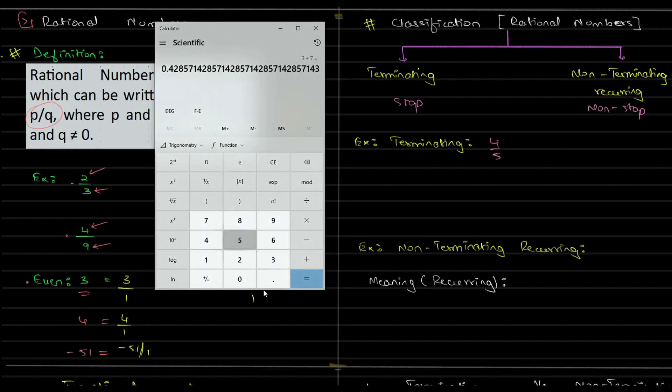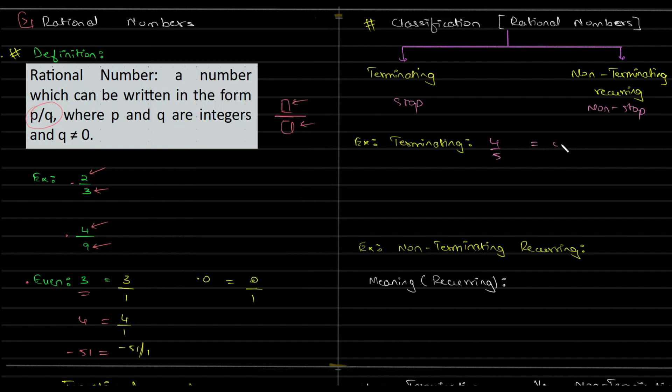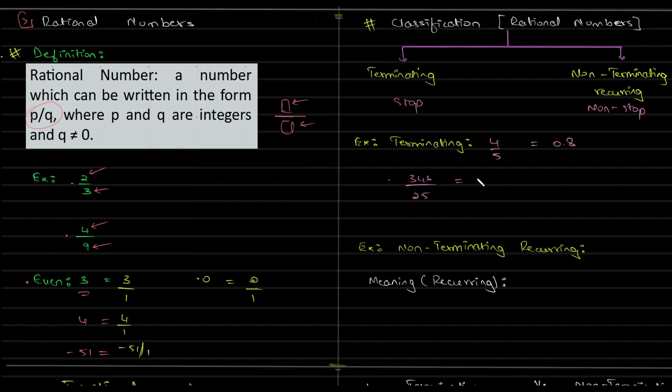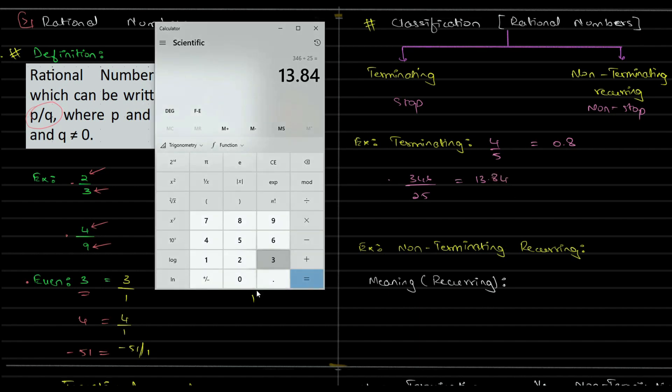What is 4 divided by 5? 4 divided by 5 is 0.8. I will show you a few more examples and then explain. 346 divided by 25 is 13.84.